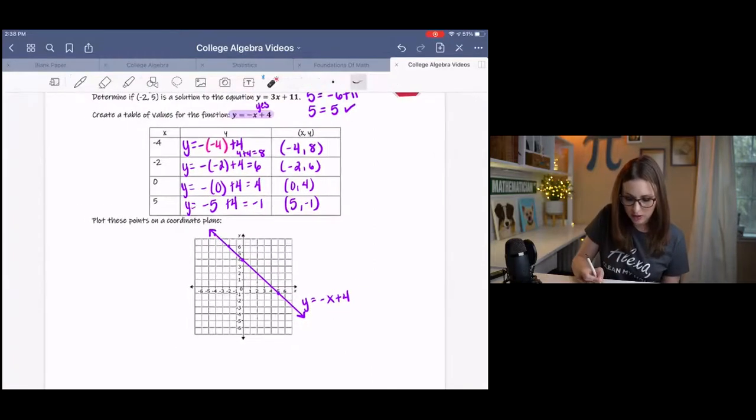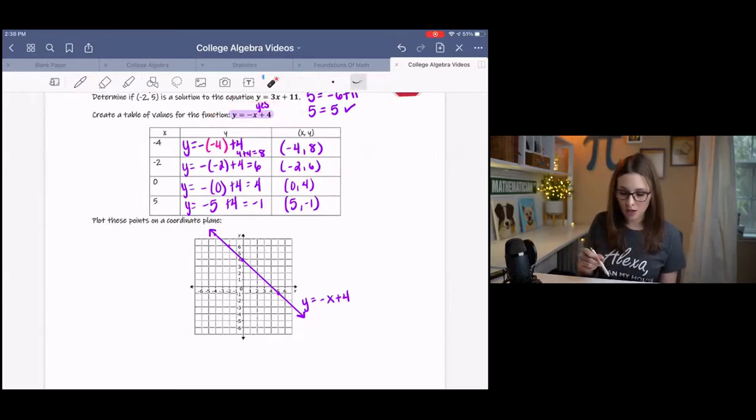This was the equation representation of our function. This is a table of values representation of our function. And this is a graphical representation of our function. They're all just different pictures or different representations of the same exact function. They are all tied together. Isn't that neat?